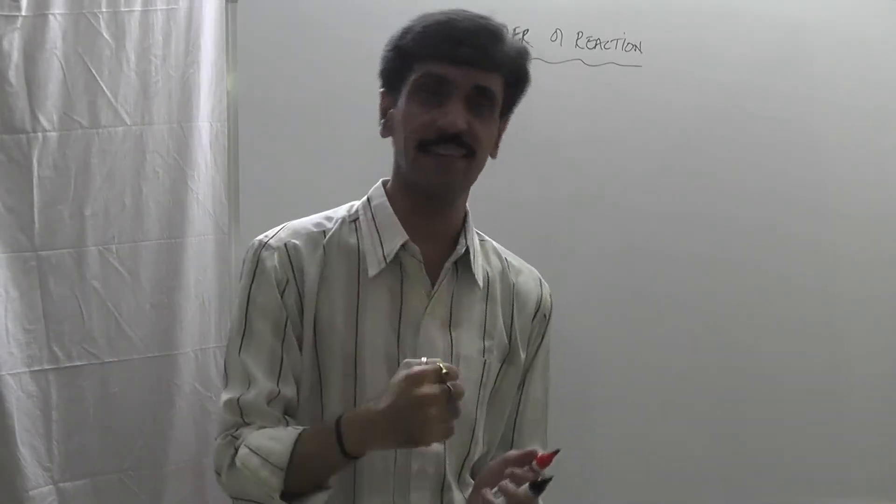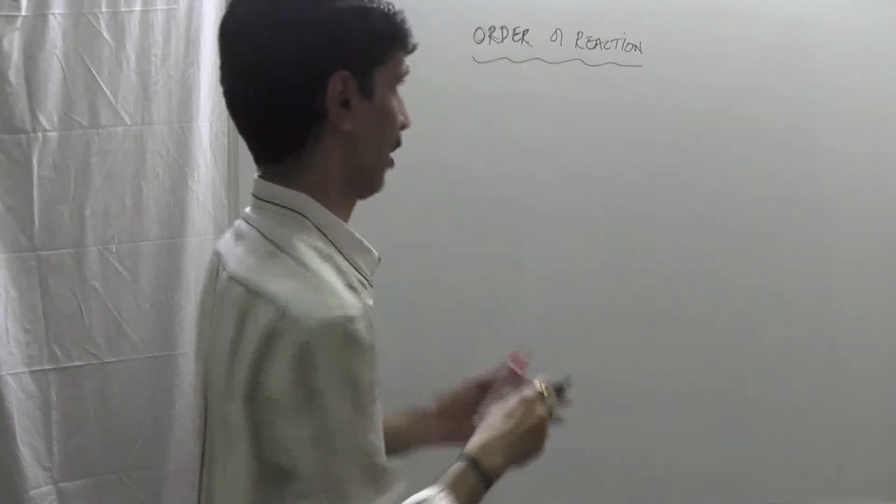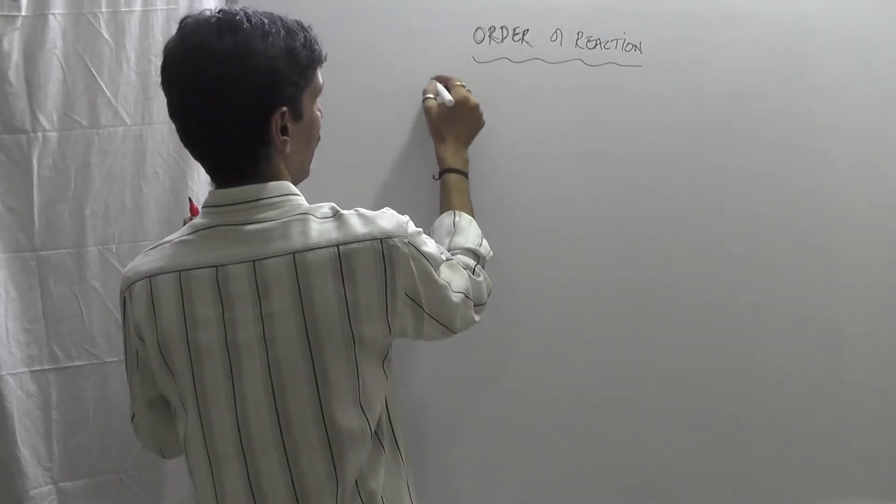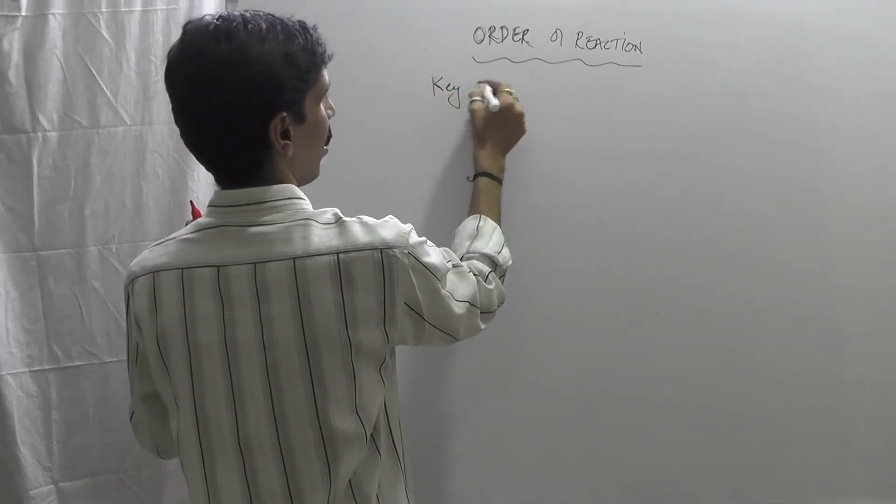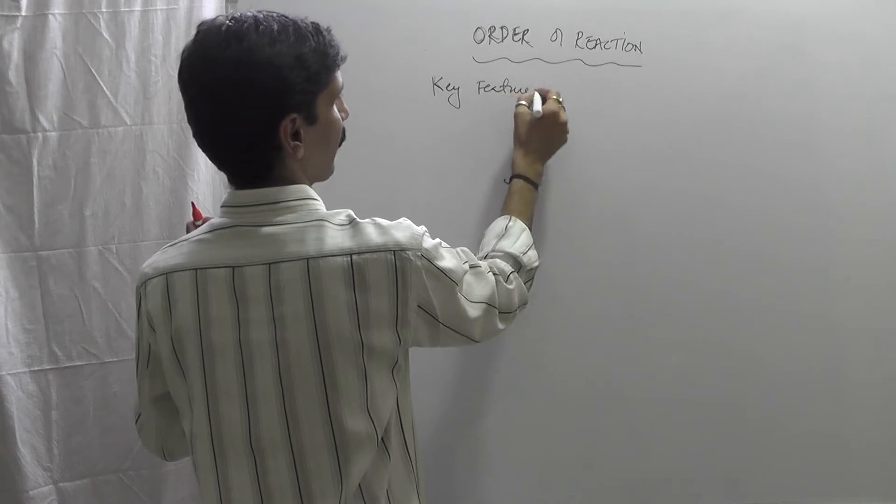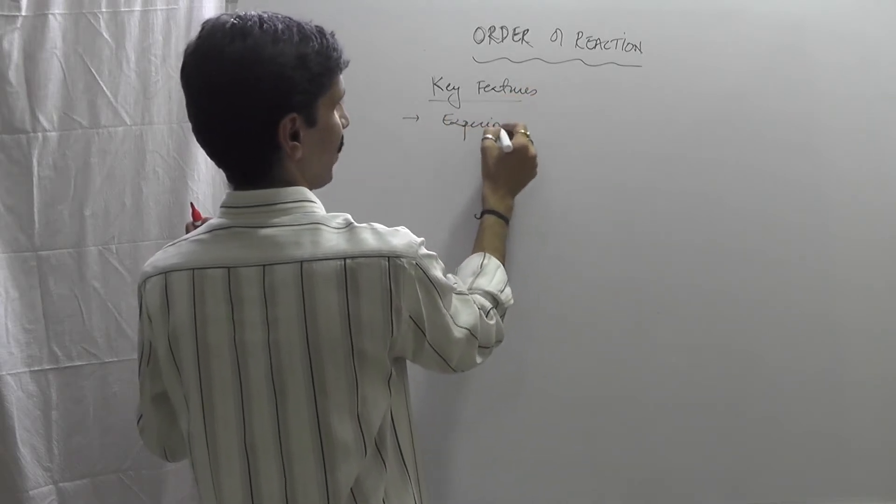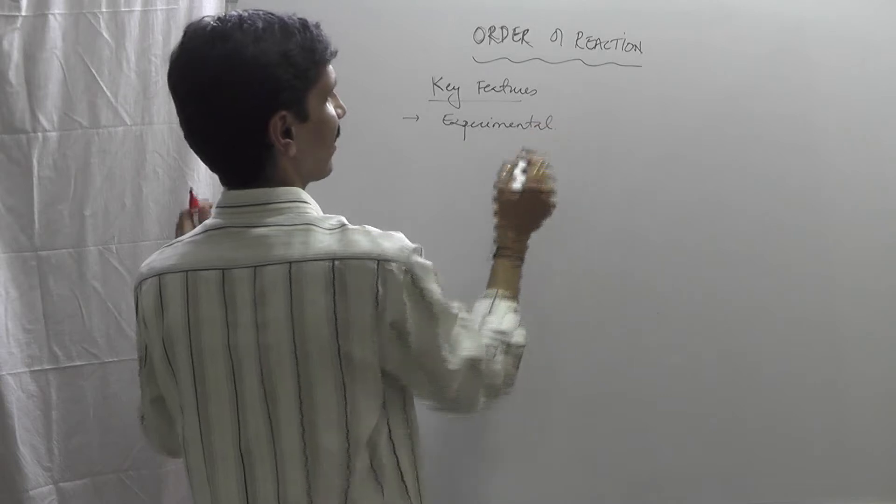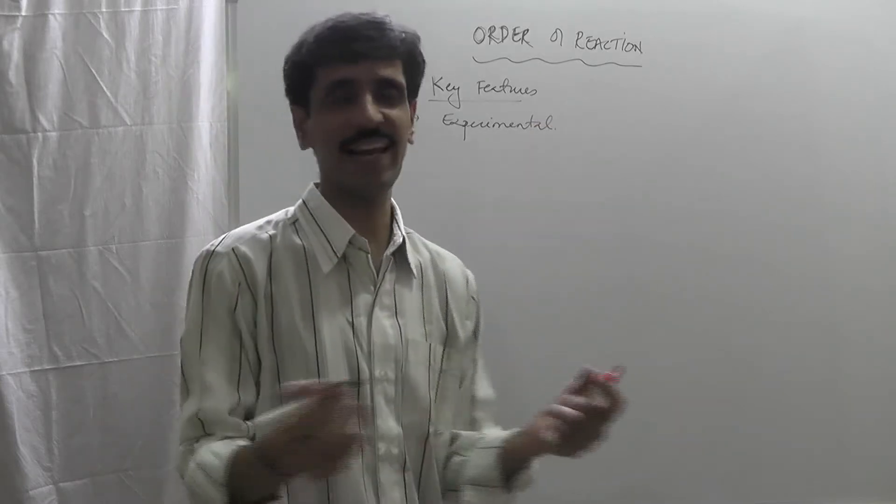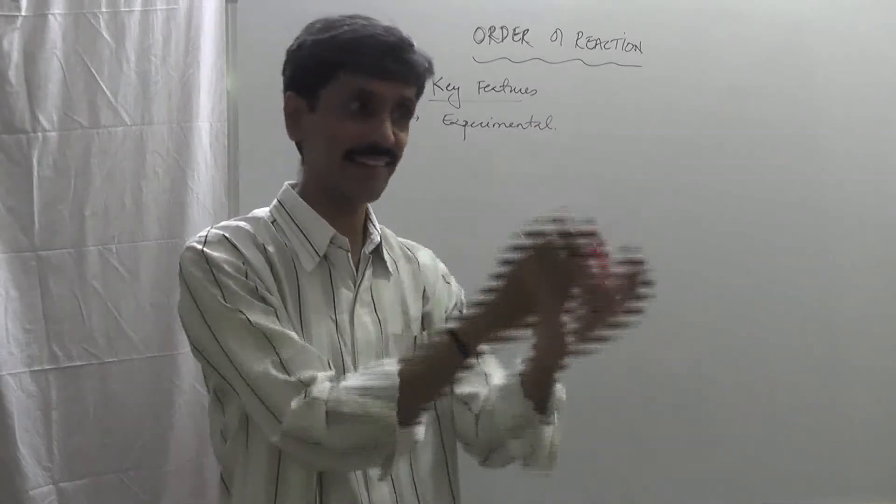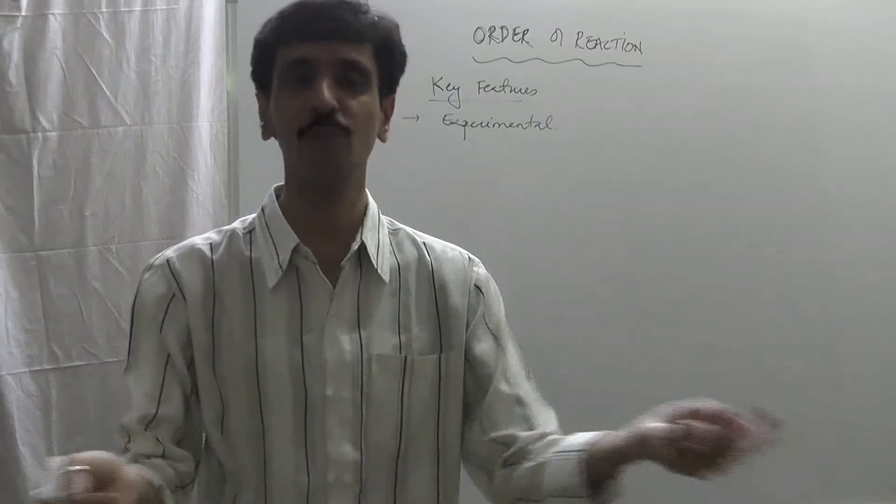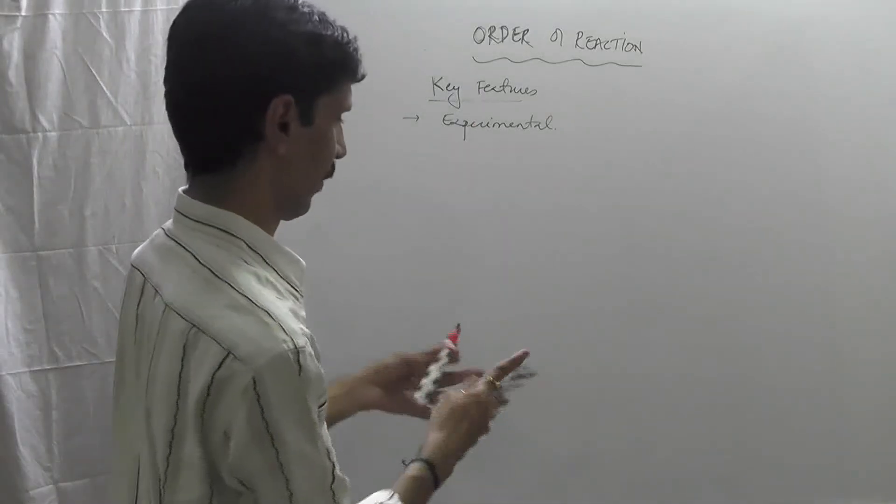Now some main features about this order of reaction. Key features of the order of reaction: first one is it is experimental. Because we got those values from X or Y. And X and Y is experimental. So if X is experimental, Y is experimental, so obviously X plus Y also is experimental. So the first point is it is experimental.